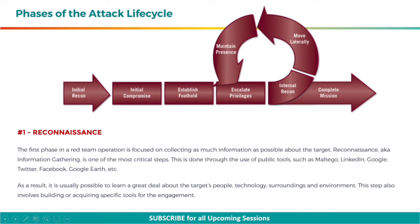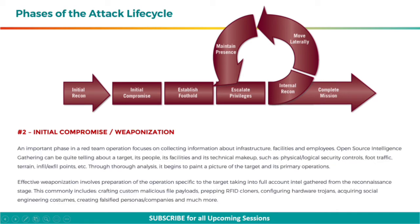This step also involves building or acquiring specific tools for the engagement. The next step is initial compromise or weaponization. An important phase in a red team operation focuses on collecting information about infrastructure, facilities, and employees. Open source intelligence gathering can be quite telling about a target — its people, its facilities, and its technical makeup, such as physical or logical security controls, foot traffic, terrain, infill, or exfill points, etc. Through thorough analysis, it begins to paint a picture of the target and its primary operations. Effective weaponization involves preparation of the operation specific to the target, taking into full account intel gathered from the reconnaissance stage.